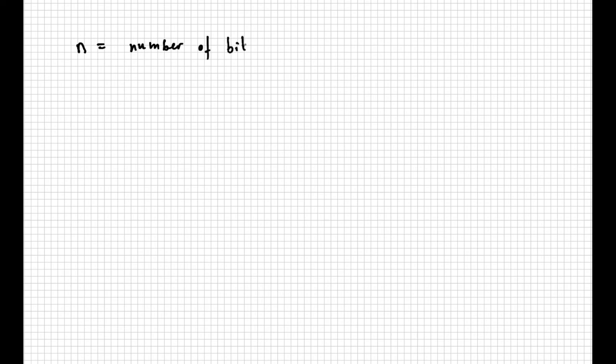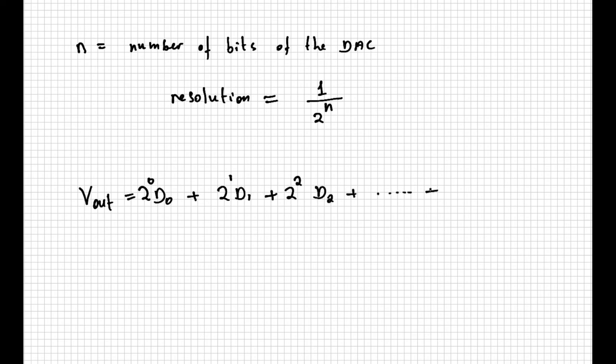Summarizing, known the number of bits N of the DAC, we can calculate the resolution as the minimum increment of voltage from one row to the next as 1 over 2 to the power of N. The Vout, instead, can be calculated like this, where D0, D1, and so forth are either 0 or the voltage associated with the logical one. So, for example, for N equals 4, the formula becomes this one.